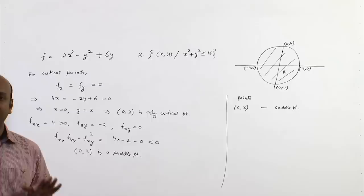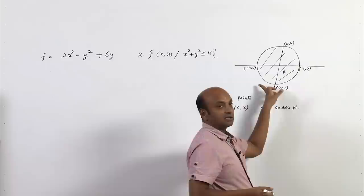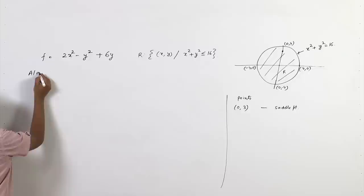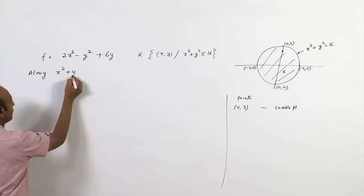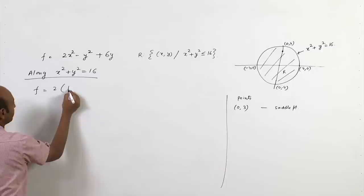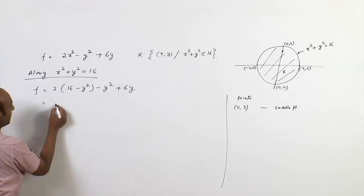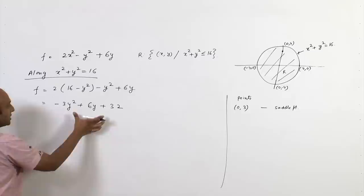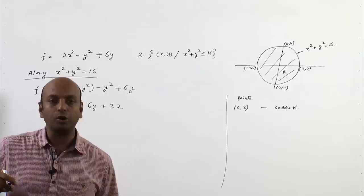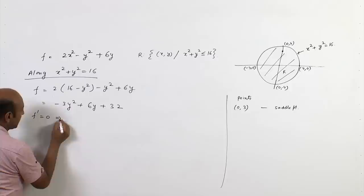The critical point (0,3) is an interior saddle point. Now we move along the boundary, which is the circle x² + y² = 16. Along this boundary, substitute x² = 16 - y² into f, giving f = 2(16 - y²) - y² + 6y = -3y² + 6y + 32, which is a single-variable function.